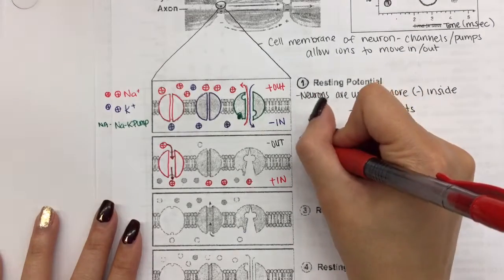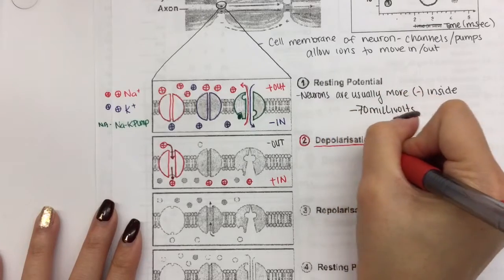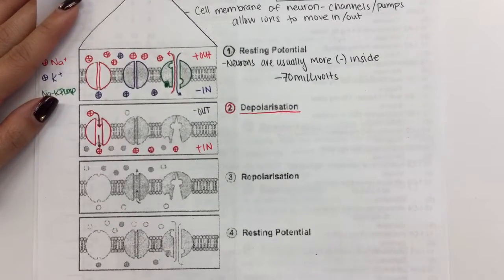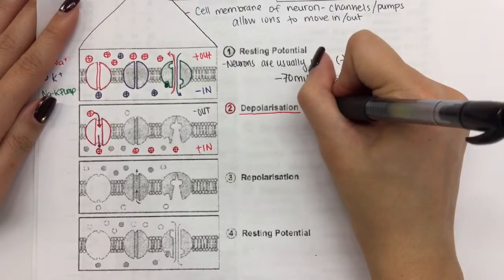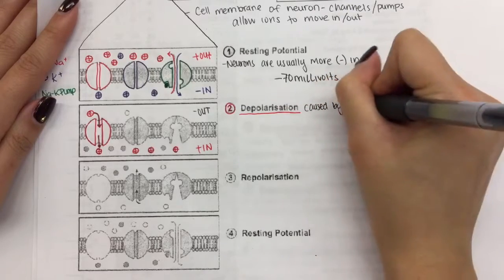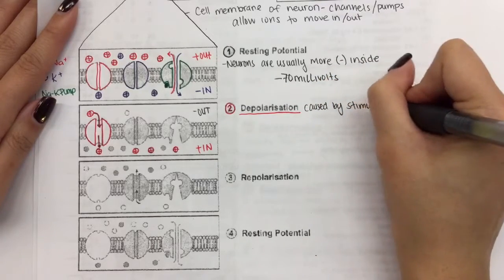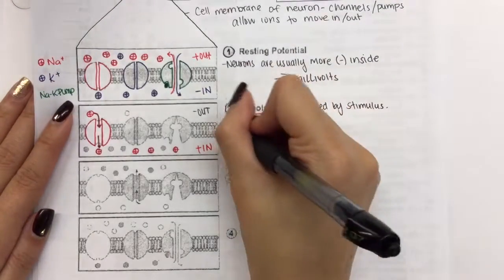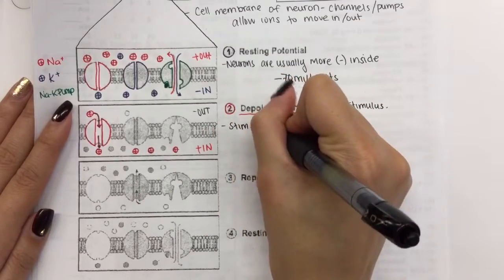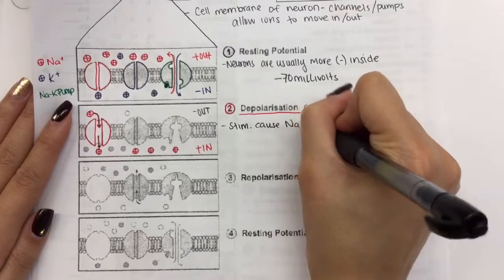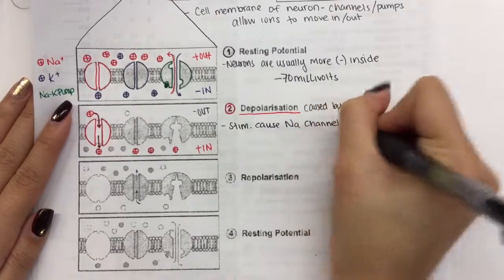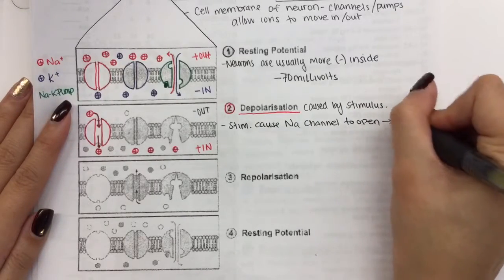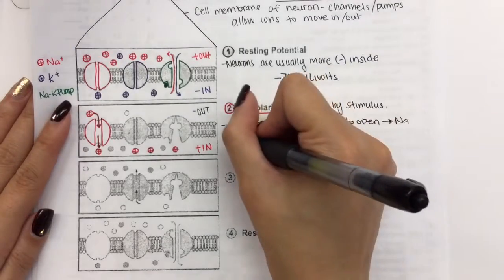So that was step number two, depolarization. Depolarization is caused by a stimulus. That could be a sound, a temperature change, a pressure change. The stimulus will cause sodium channels to open. If sodium channels open, this causes sodium ions to rush into the neuron.